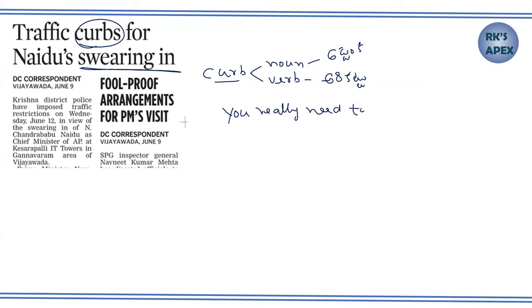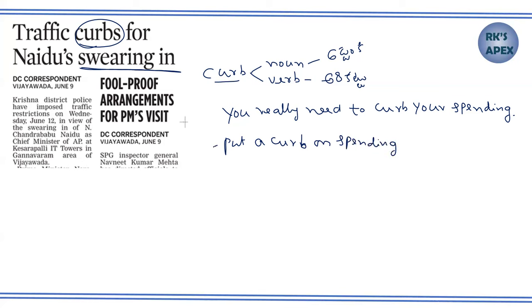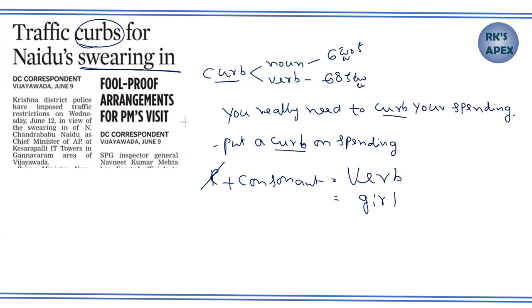For example: you really need to curb your spending. Put a curb on spending. So curb means to restrict or control. You need to curb your spending — that is the thumb rule.